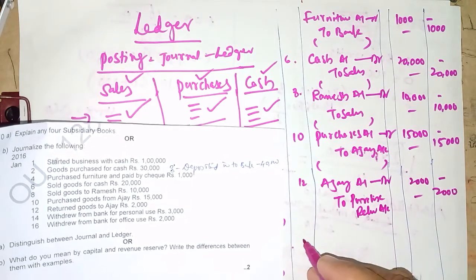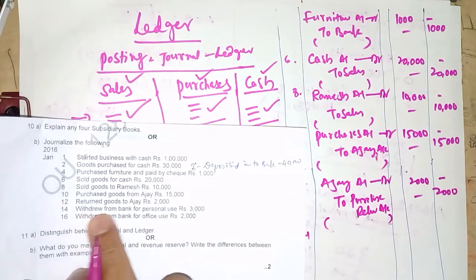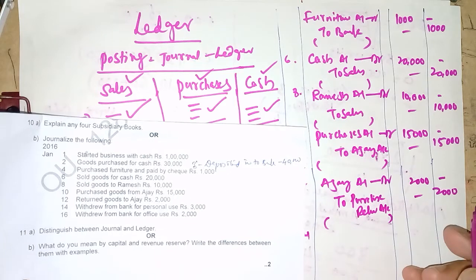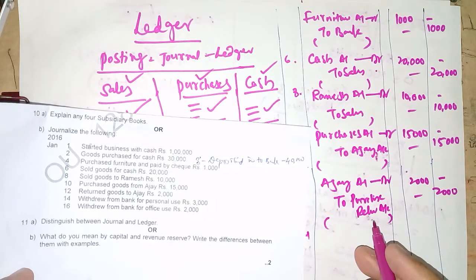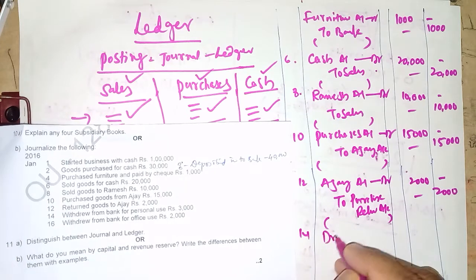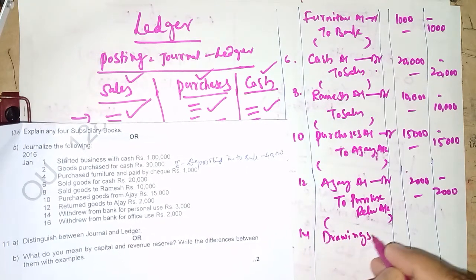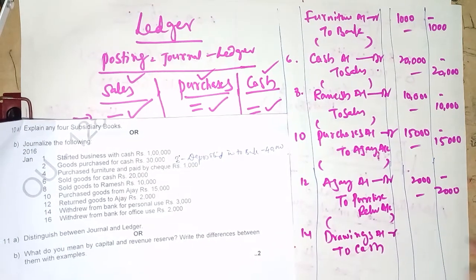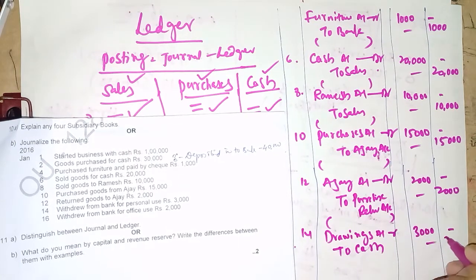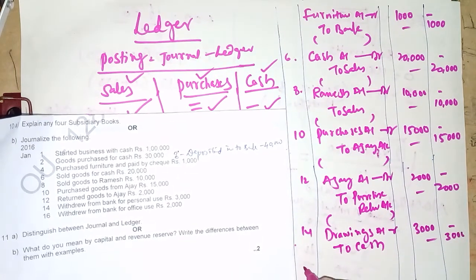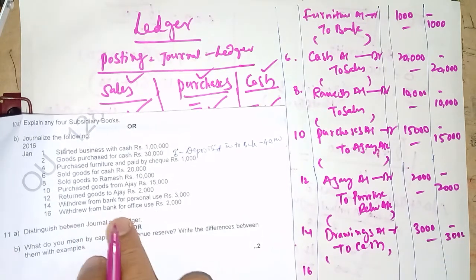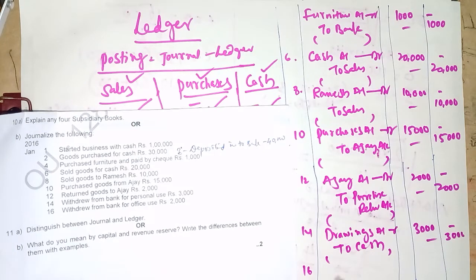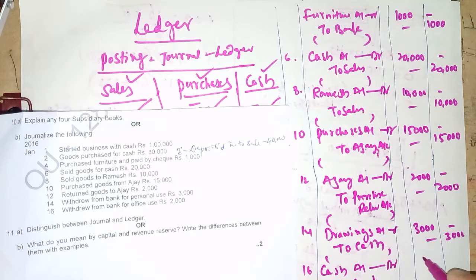On the 14th: withdrew from bank for personal use. When it is for personal use it is recorded as drawings. Entry: Drawings Account debit, to Cash Account — 3,000. On the 16th: withdrew from bank for office use. Entry: Cash Account debit, to Bank Account — 2,000.